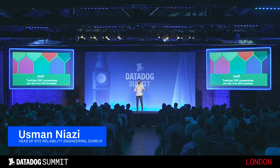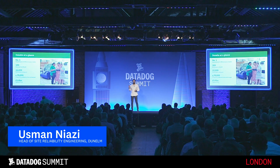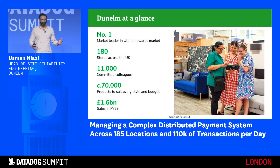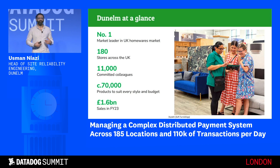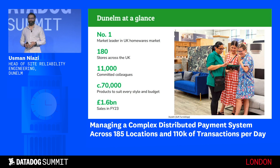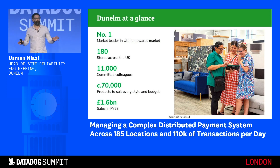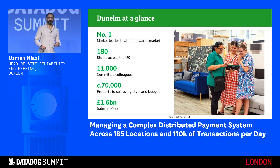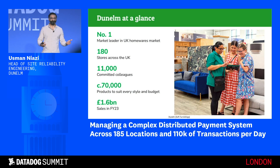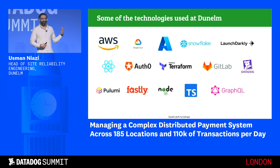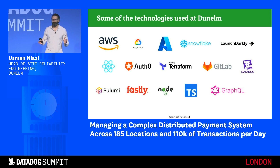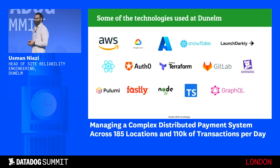I'll go through that journey, but first a little bit about ourselves. We are the UK's market leader in homeware. We have over 180 stores across the country. We get around 110k transactions daily. We also have an e-commerce website which attracts around 2 million sessions daily. To support all of that, we build a lot of services in-house but also use third-party off-shelf solutions. We are big users of serverless — in December alone we had around 2.5 billion Lambda invocations.